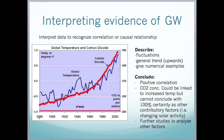Once we've described the data, we need to make a conclusion. From this graph, we can conclude that there is a positive correlation between CO2 concentration and global temperature. But we can't be certain — we have to say they could be linked but not with 100% certainty, because there are other contributory factors that could be involved, such as changing solar activity. We should also mention that further studies need to be carried out to analyse any other factors.